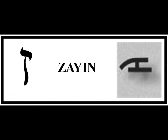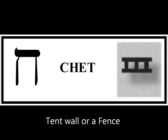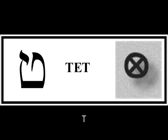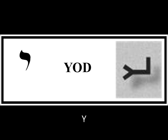The seventh letter is Zayin. It has a Z sound. Its numerical value is seven, and it can be a picture of a weapon. Chet is the eighth letter of the Aleph Beit with a numerical value of eight, and it has an H sound. It is a picture of a tent wall or a fence. Tet is number nine with a T sound, and it can be a picture of a snake or a clay basket. Yod is number ten. It has a numerical value of ten, its pictograph is an extended hand, and it has a Y sound.